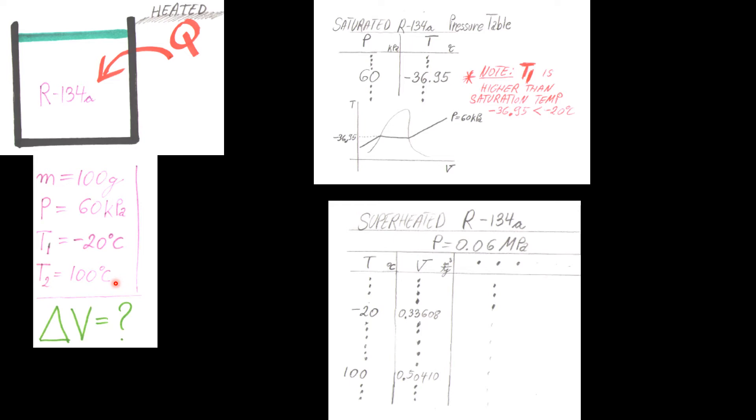Find the temperatures that we need. We need negative 20 and we need 100. For both of them, for negative 20, find the specific volume right here, and for 100 the specific volume is right here. Let's go ahead and use them.